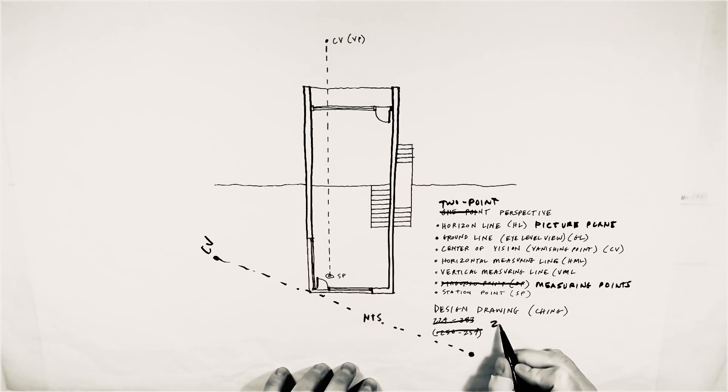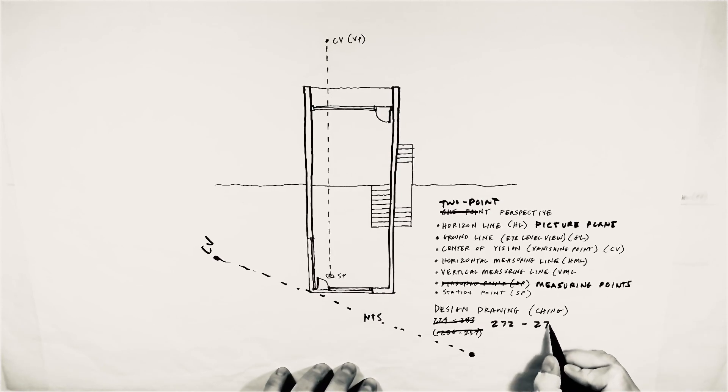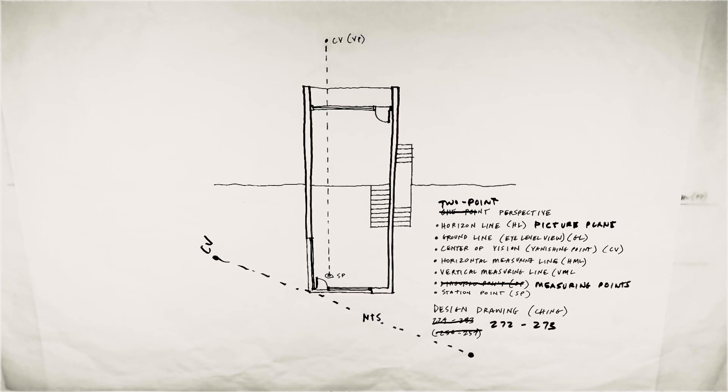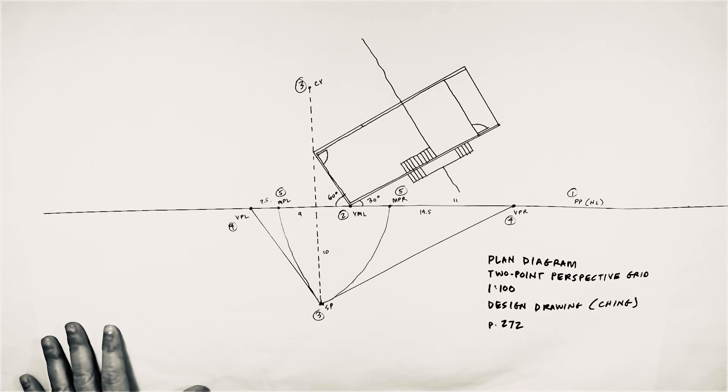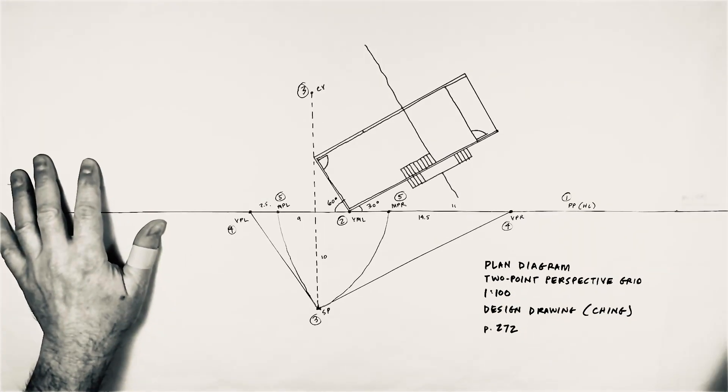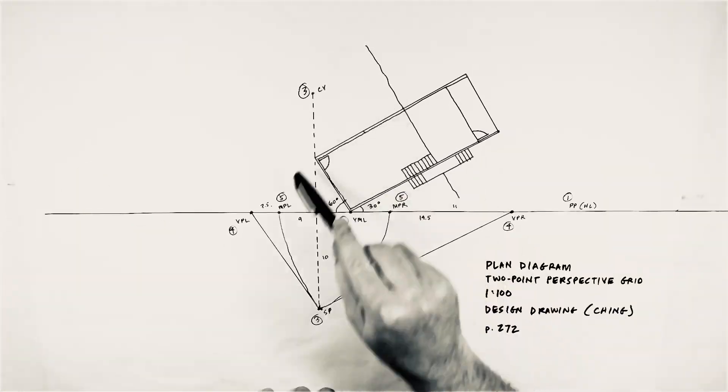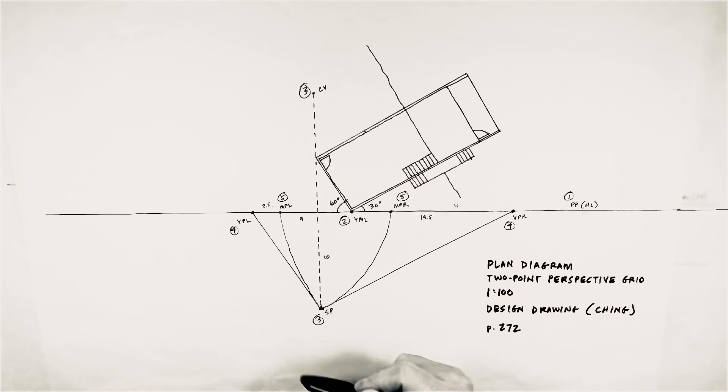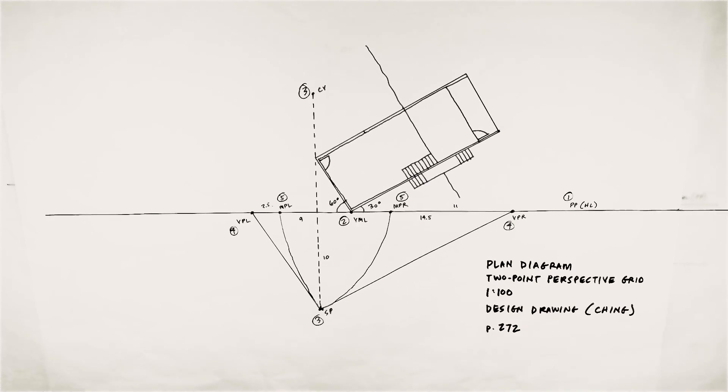Okay, and the station point still exists. The page numbers, 272 and 273, you can find those there. The first thing you want to do is create a plan diagram. Sort of sets the angle at which you want to view, kind of understanding where the center of vision will be relative to that, and your vanishing points.